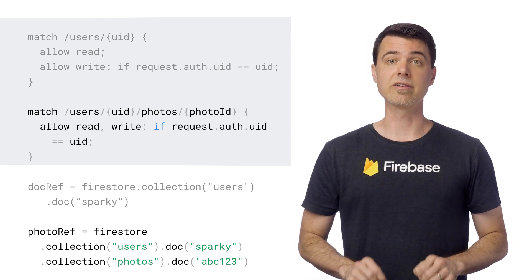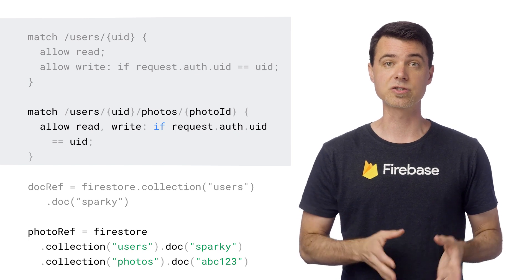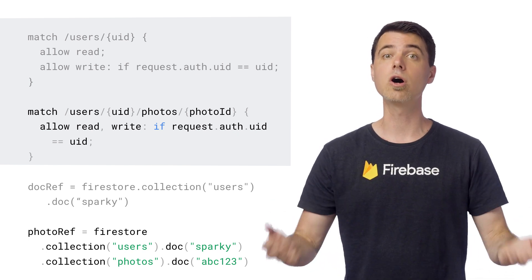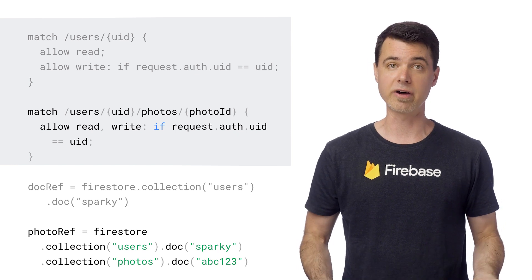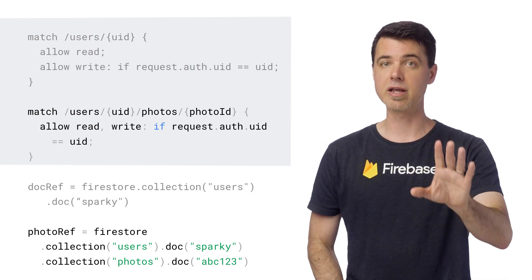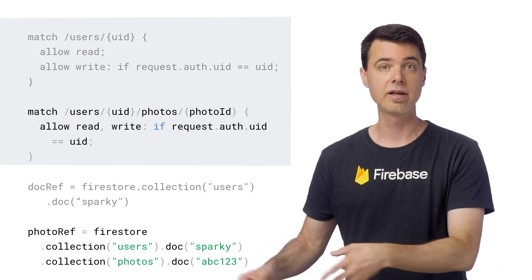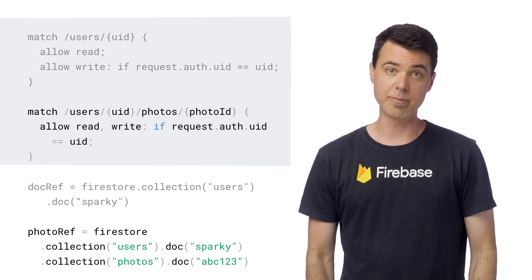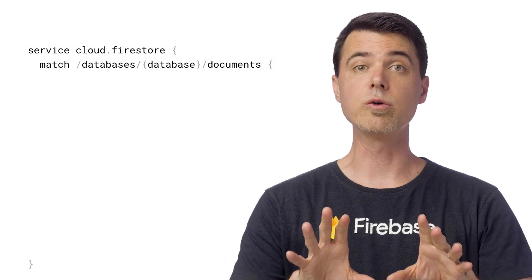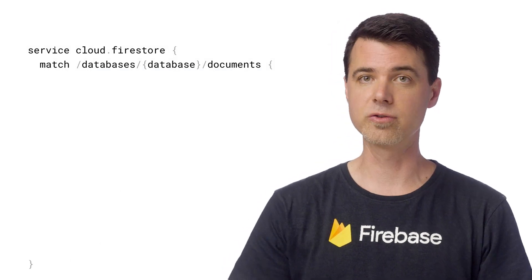Using sub-collections like this to change the permissions of various pieces of data associated with the user is a very good practice. You should always model your data in Cloud Firestore with security rules in mind. Think carefully about which users you want to be able to access which content. There's a lot to discuss on this topic, and I'll cover that in future videos. But I'll leave you with one trick for organizing your rules, if you choose to use it.